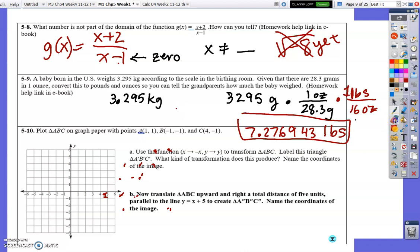All right. Number, oh, lovely. This one is a translation question. Let's start just by plotting the points. A is 1 comma 1. B is negative 1, negative 1. So, this was A. This is B. And C is 4, negative 1. And then, use this function to transform. So, we're going to change X into negative X and Y. So, A prime will be negative 1, positive 1. B prime will be positive 1, negative 1. And C prime will be negative 4, negative 1. Make sure you translate that. Do the work on the paper. I'm going to leave that one to you.